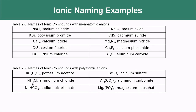For polyatomic ions: the ammonium polyatomic combined with chlorine is called ammonium chloride — we still change the last part to '-ide'. But when the polyatomic acetate is the anion bound to potassium, we call it potassium acetate — we do not change it to 'acetide' when the polyatomic is the anion.